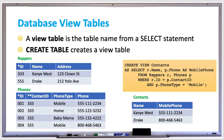A view can restructure table columns and data types without changing the underlying database design. A view table is the table name from a SELECT statement, and the SELECT statement is also called a view query. It's not stored in the database, but it provides useful information to users. The table specified in the view query's FROM clause is called a base table.